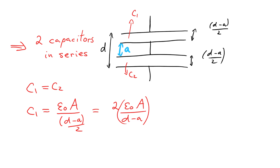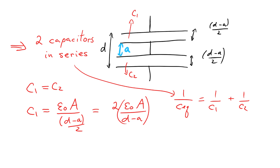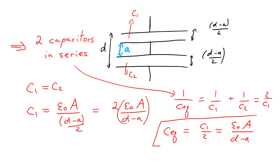Now we have two capacitors in series. For capacitors in series, the equivalent capacitance satisfies 1/C_eq = 1/C1 + 1/C2. Since C1 equals C2, we have 1/C_eq = 2/C1, so C_eq = C1/2. The 2 in the denominator cancels with the 2 in the numerator from the spacing, and we're left with the equivalent capacitance equal to ε₀A divided by (D minus A). That's the total effective capacitance of the parallel plate capacitor with the metal slab inserted inside.